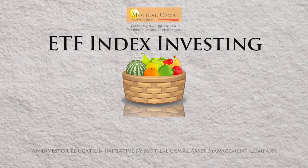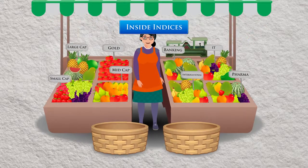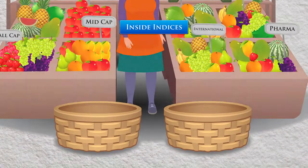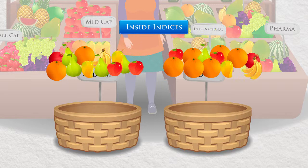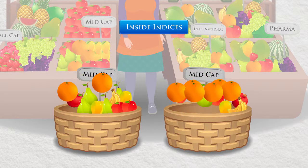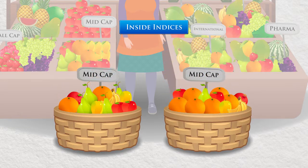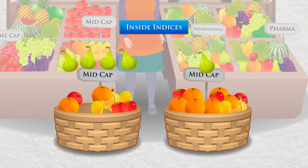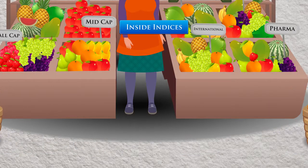Let's now look at how ETFs track indices. ETF baskets can be created to track different indices. It is important to remember that each of these indices operates differently, even though they may be similar by name or concept. For example, when you compare two mid-cap indices, even though they may track mid-cap stocks, they may be vastly different when it comes to their constituent stocks — because of the construction methodology.